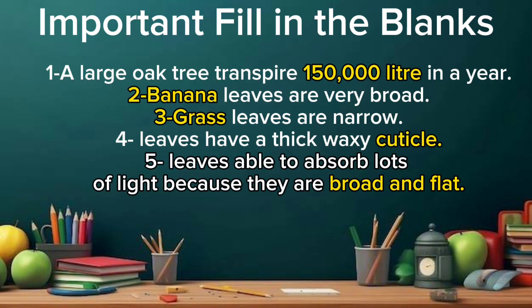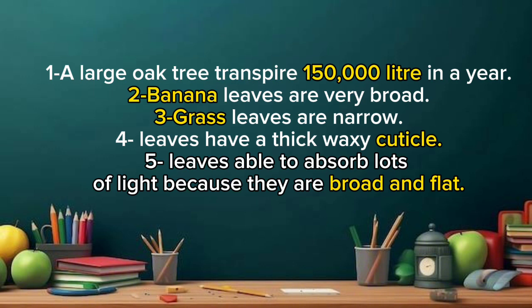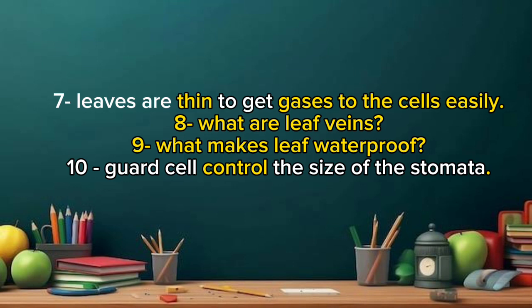A large oak tree transpires 150,000 litres in a year. Banana leaves are very broad. Grass leaves are narrow. Leaves have a thick waxy cuticle. Leaves are able to absorb lots of light because they are broad and flat. Leaves are thin to get gases to the cells easily. What are leaf veins? What makes a leaf waterproof? Guard cells control the size of the stomata.